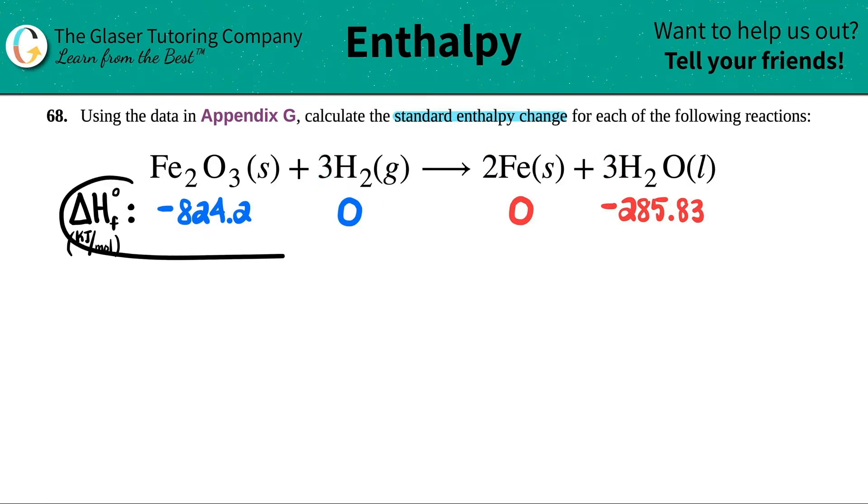And what I did for you guys is I went into the Appendix G already, and I found out the numbers that we're going to be using. Remember, enthalpy is delta H. So anytime that they're asking for an enthalpy change, you have to go get the delta H values, not the G or the S values.